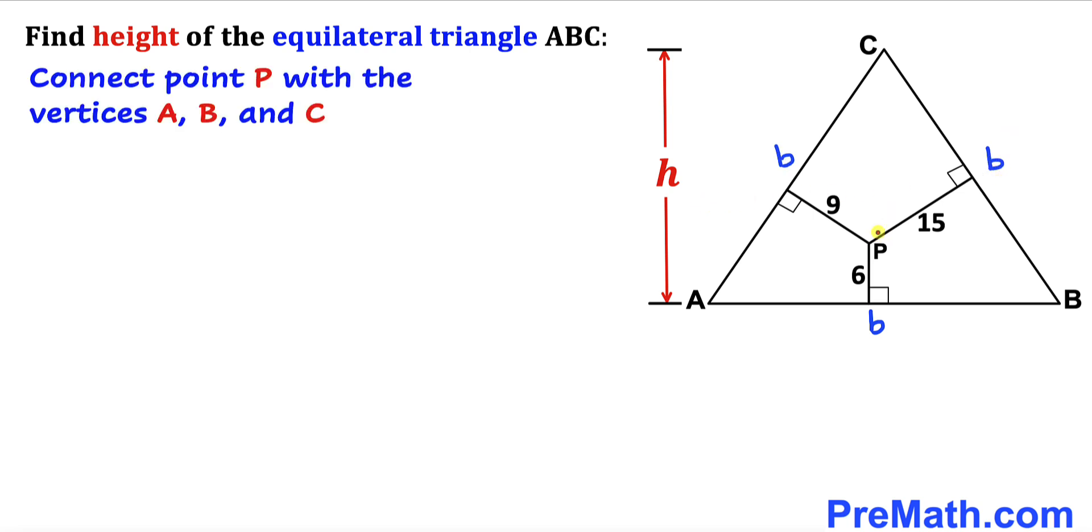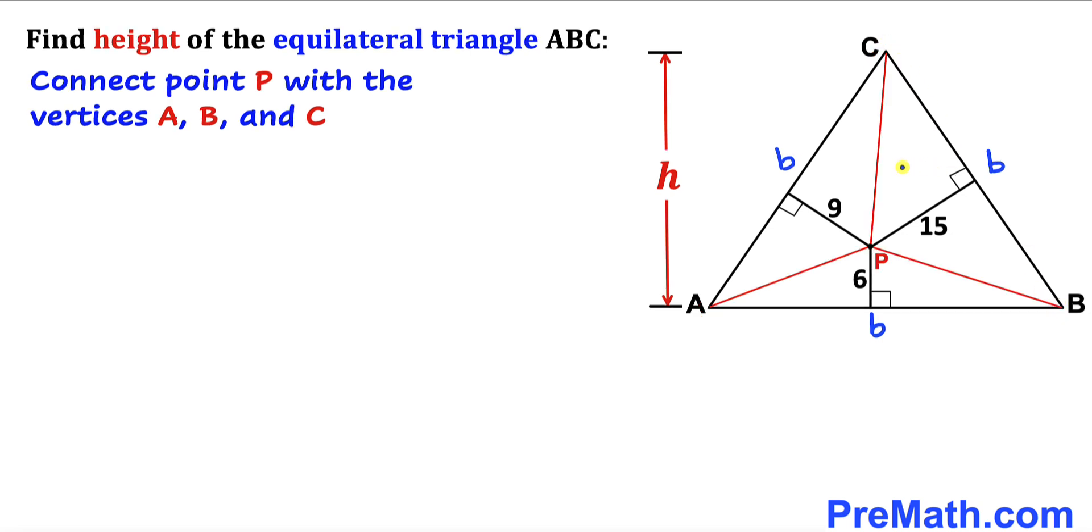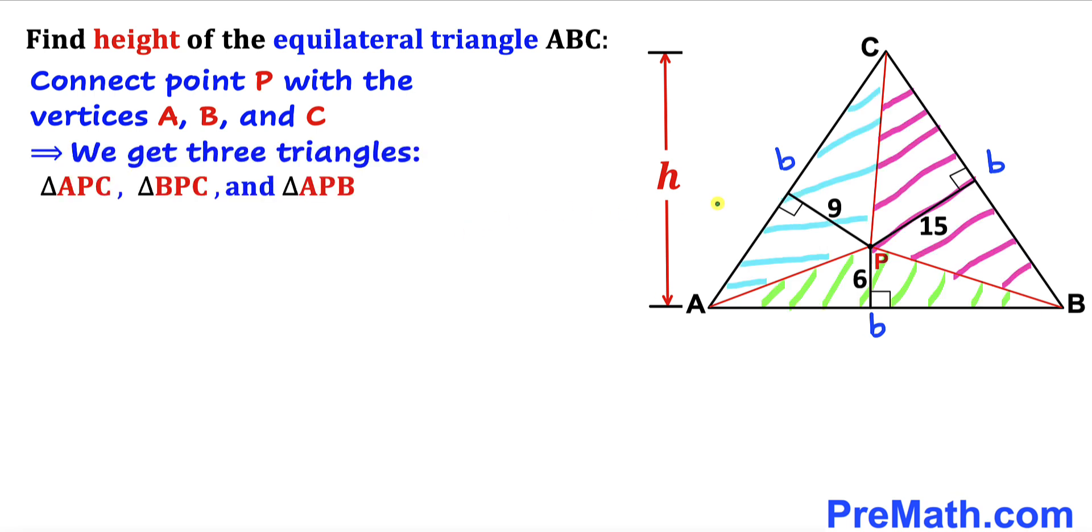And here's our next step. Let's go ahead and connect this point P with all these vertices A, B, and C of this triangle as you can see in this next diagram. And as a result we got these three triangles: APC, BPC, and APB. And just one more thing, keep in mind that these angles are 90 degrees.